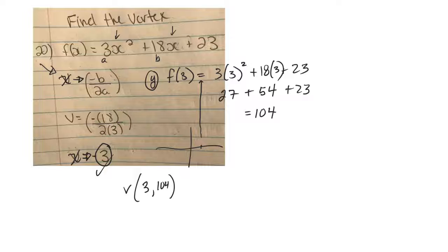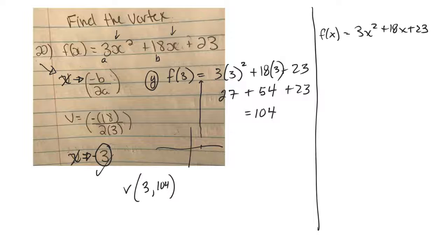Now, like I said, we could use the complete the square method as well. I'll maybe do that over here. So f of x equals 3x squared plus 18x plus 23. So what you do is you group the first two and factor a number out, whatever number is out front there. So it would be 3 times x squared plus, that would be 6x plus 23.